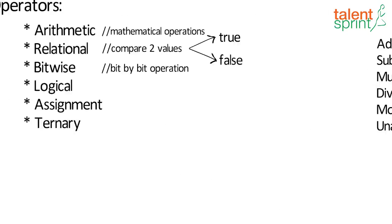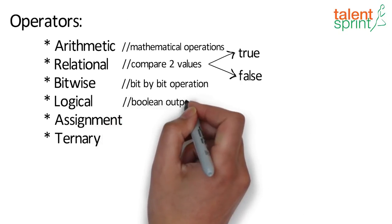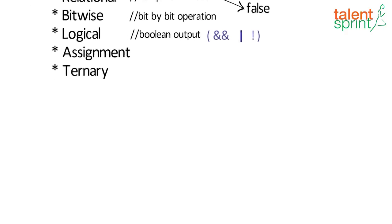Logical operators operate on boolean values and give a boolean output in return. That is true or false.